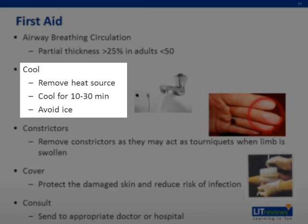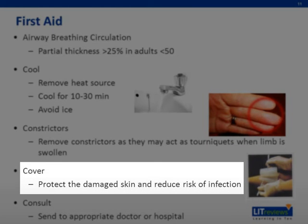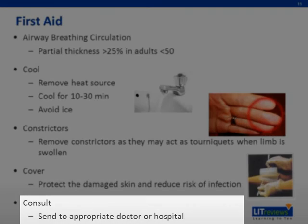First, cool the burn under running water for at least 10 to 30 minutes and remove the heat source at the same time. The temperature of the water can be anywhere from 1 to 5 degrees Celsius or even room temperature, but use of ice or ice-cold water is not advisable due to frostbite risk. It is also important to monitor the patient, especially if large areas are cooled, as they may become hypothermic. The second C stands for constrictors — remove those constrictors. Objects such as rings and bangles can act as a tourniquet upon the onset of edema, constricting the limb and compromising distal circulation, and they are even more difficult to remove when the swelling sets in. Lastly, cover the damaged skin to protect it and reduce the risk of infection, and consult the appropriate doctor or hospital specialist.